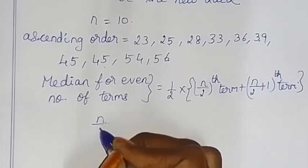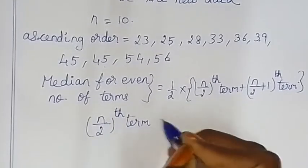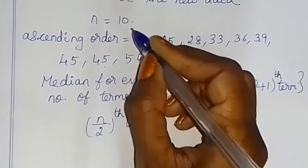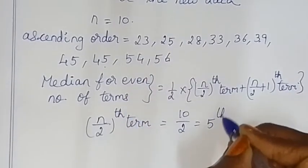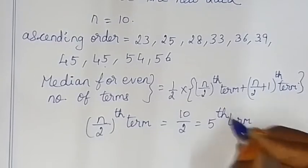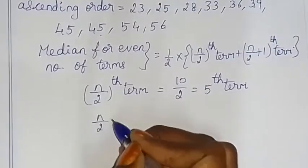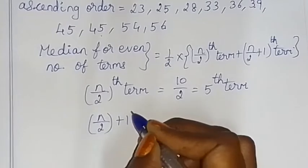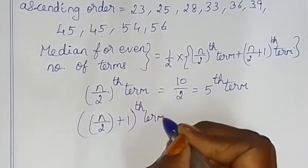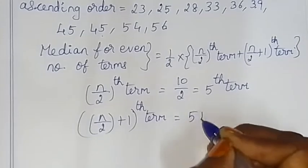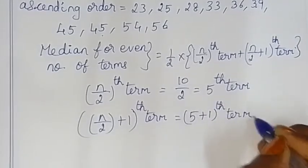Number of terms is 10. Since it is even, use N/2: 10/2 = 5th term. And N/2 + 1 = 5 + 1 = 6th term.